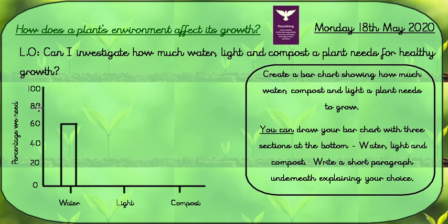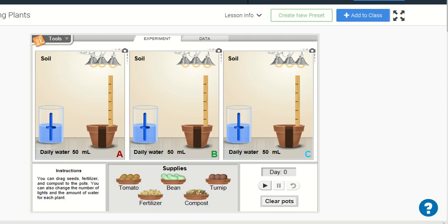After you've produced your bar chart, you're going to write a short paragraph underneath explaining your choices. But before we do any of that, we're going to have to investigate — we're going to have to be scientists. We're going to use an online simulator where we're going to grow our plants, and we're going to vary how much water, light, and compost we use. Here you can see I have my simulator and today we're going to be growing tomato plants.